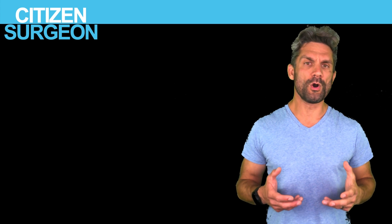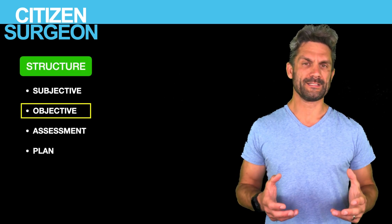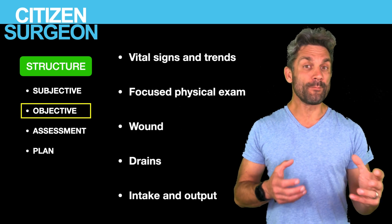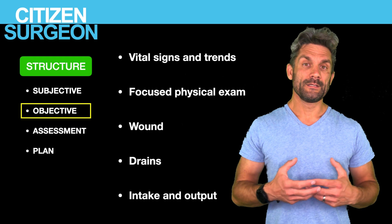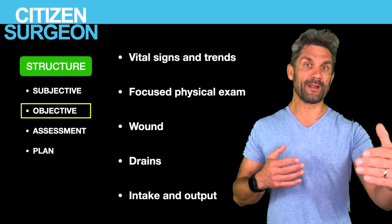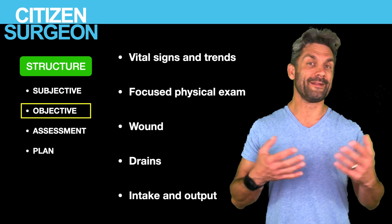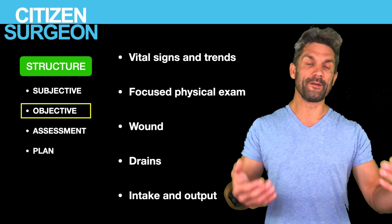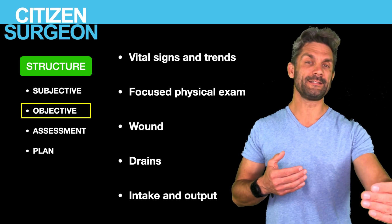What are the things we want to know in the objective part of the presentation? We want to know the vital signs, and more importantly, the trends. Has the patient been tachycardic, and has the tachycardia been worsening overnight? For example, they started last night at three in the afternoon with a heart rate of 85, and over the course of the night it's now 145, and they're also febrile. We want to know that trend.